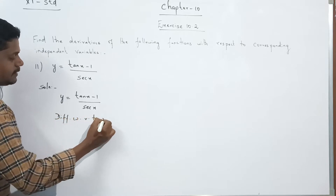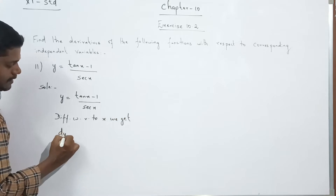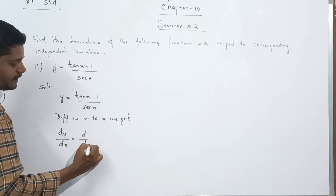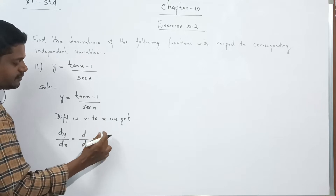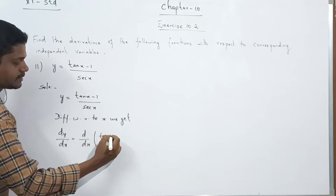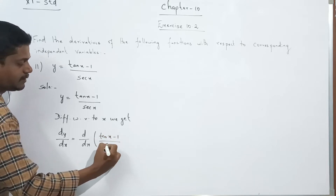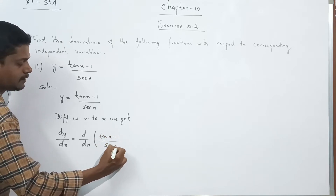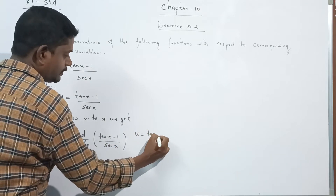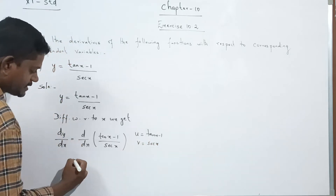Here x is the independent variable. So dy/dx = d/dx of tan x minus 1 by sec x. We can write this as u = tan x minus 1, v = sec x.